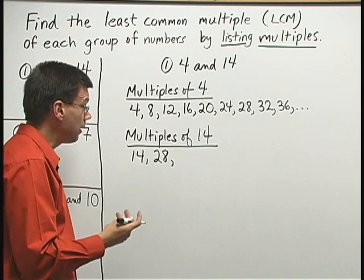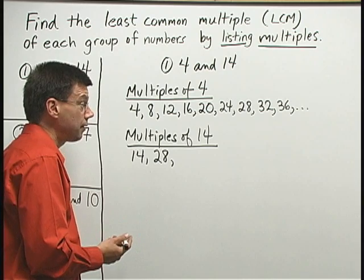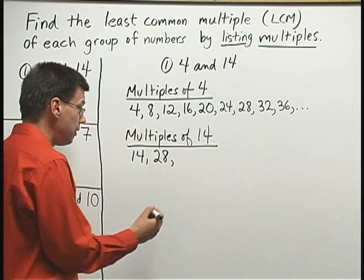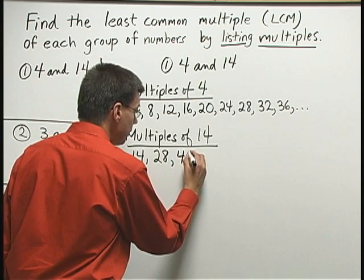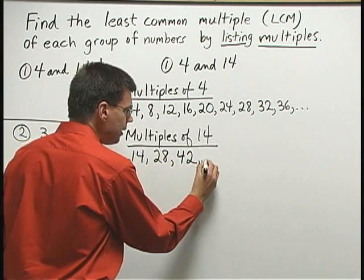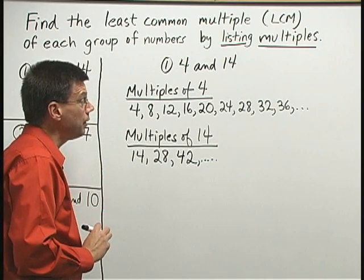Now, 3 times 14 is a little bit more complicated. You may have to figure that out with pencil and paper. 3 times 14 is going to be 42. And actually, I don't need any more. In fact, I really didn't even need the 42 here.